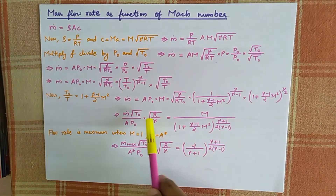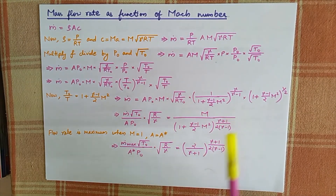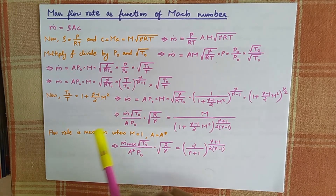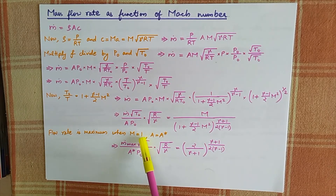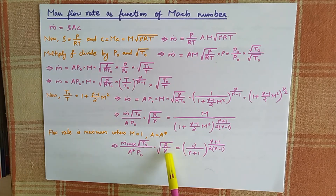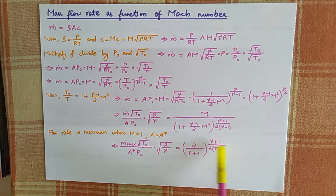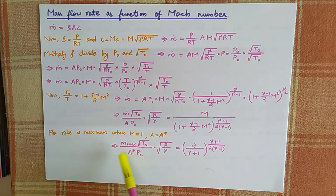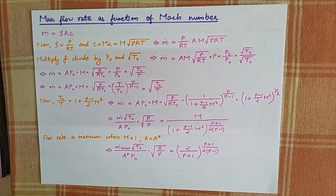This gives the mass flow rate in terms of Mach number: M-dot times square root of T0, divided by A times P0 times square root of R divided by gamma, equals M divided by 1 plus gamma minus 1 over 2 times M-squared, raised to gamma plus 1 divided by 2 times gamma minus 1. The mass flow rate is maximum at Mach number 1, where the area is the critical area A-star. The maximum flow rate equation is M-max times root of T0 divided by A-star times P0 times square root of R divided by gamma, equals 2 divided by gamma plus 1, raised to gamma plus 1 divided by 2 times gamma minus 1. That brings me to the end of part 2 video lecture of CFF module 2. Thank you.